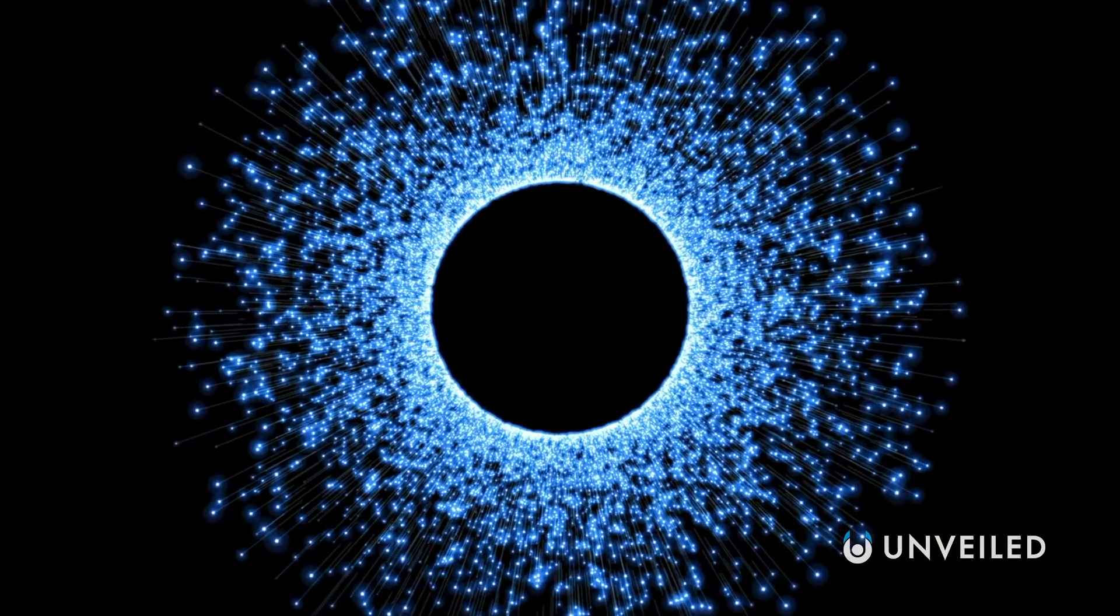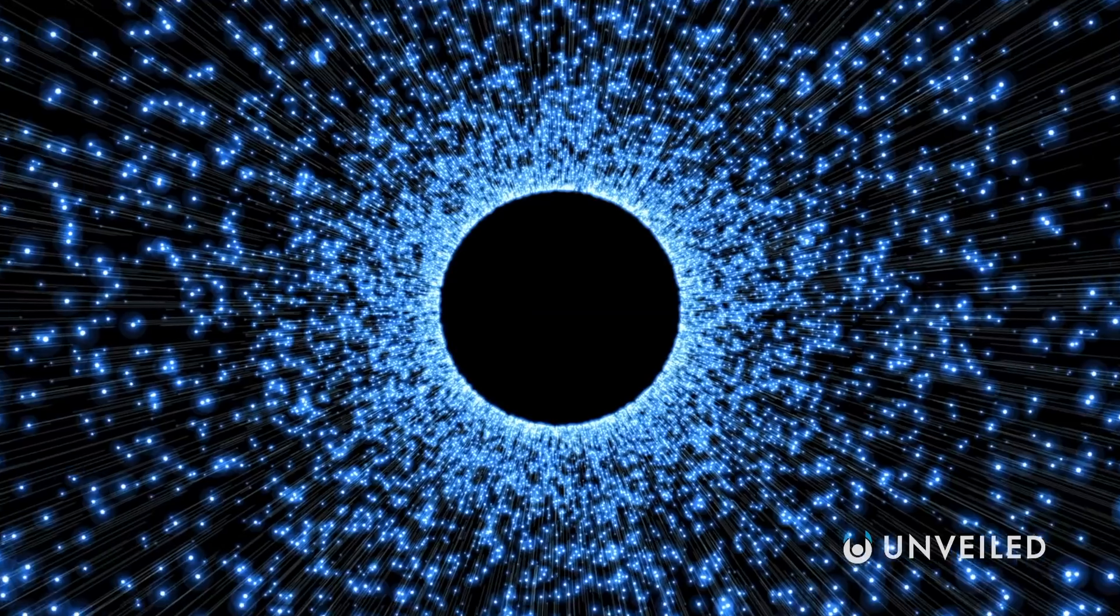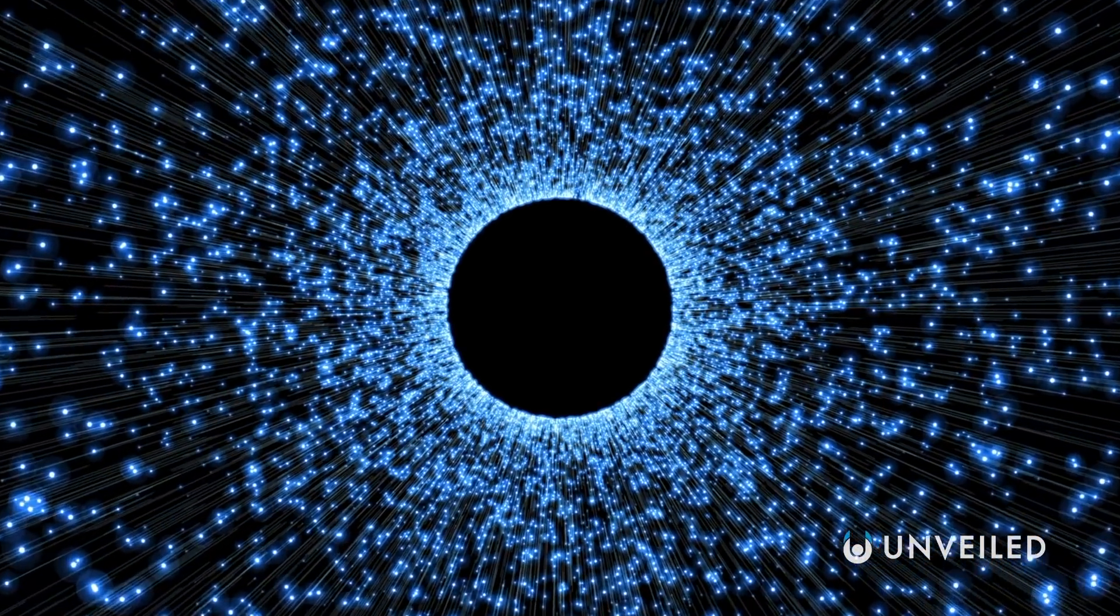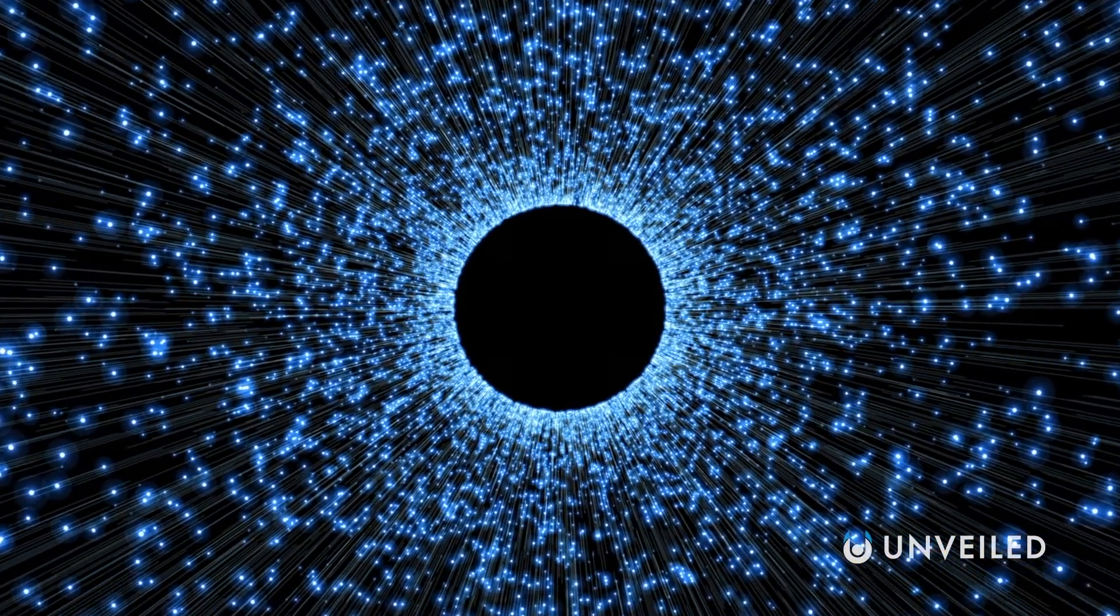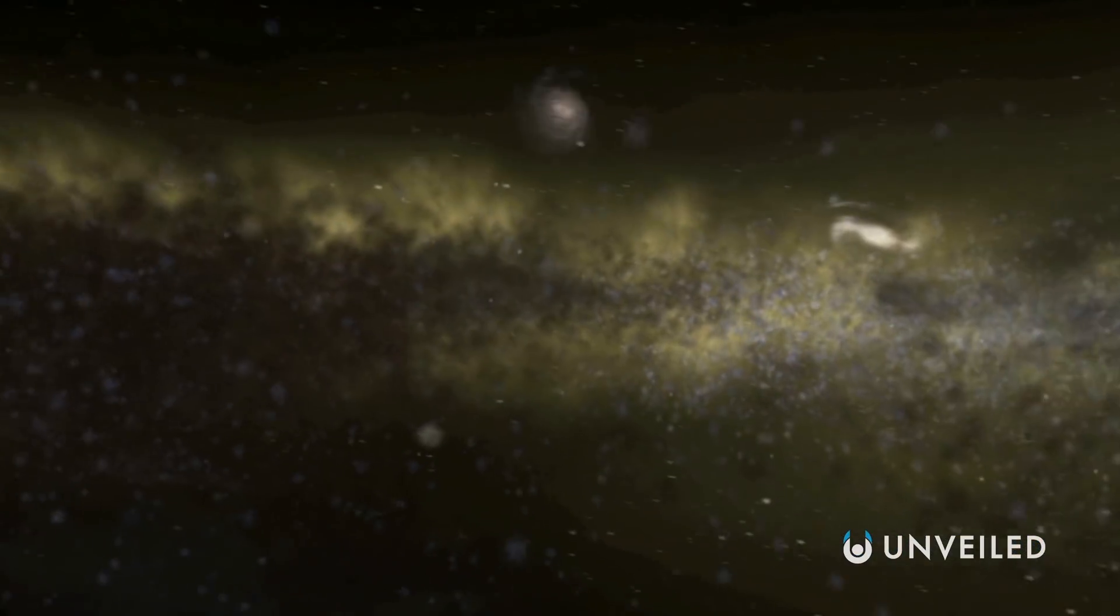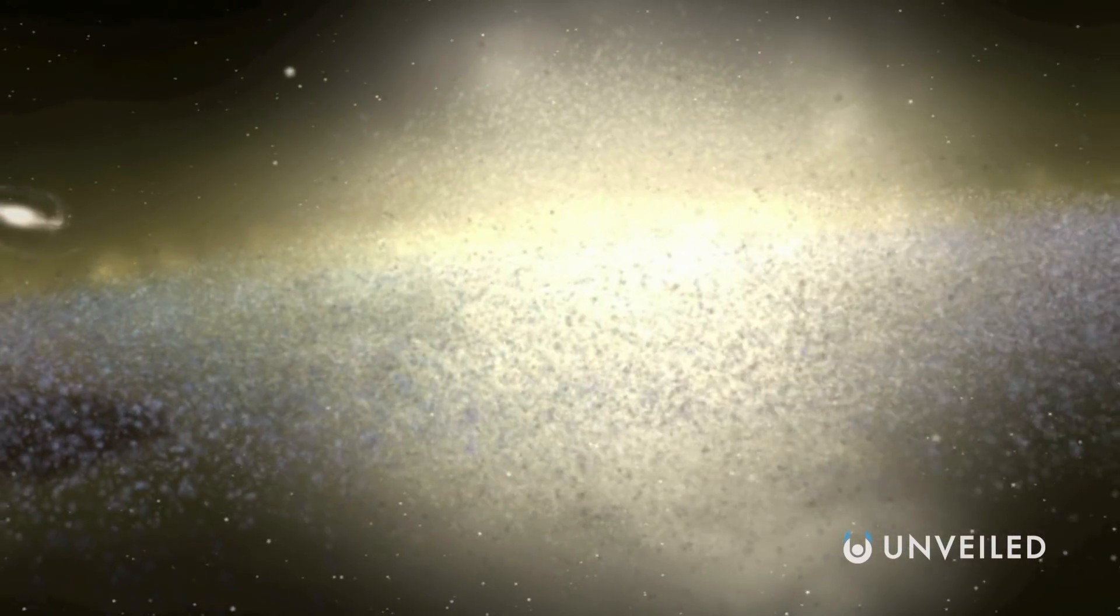If true, it's this halo that keeps a galaxy so rigidly structured, with the dark matter inside the halo gravitationally bound together just like normal matter is. The Milky Way's proposed halo is thought to be spherical, and to comfortably encompass our entire galaxy, being much, much larger than the Milky Way itself.